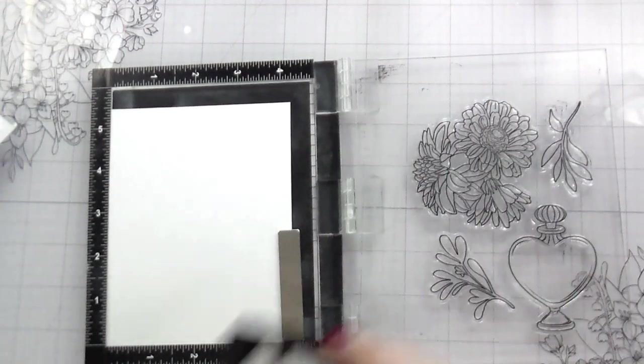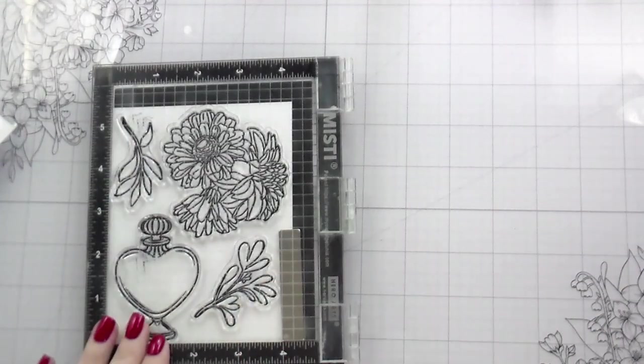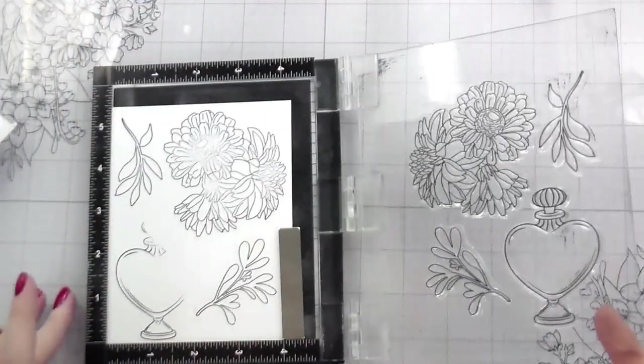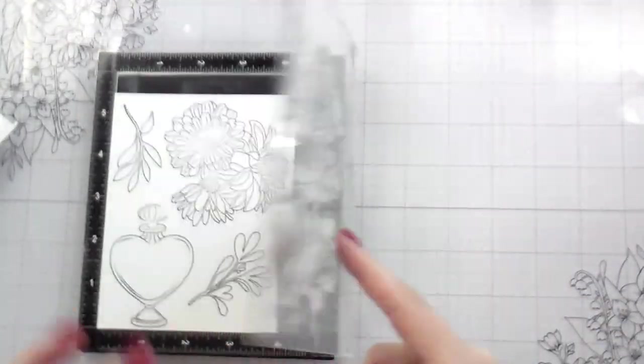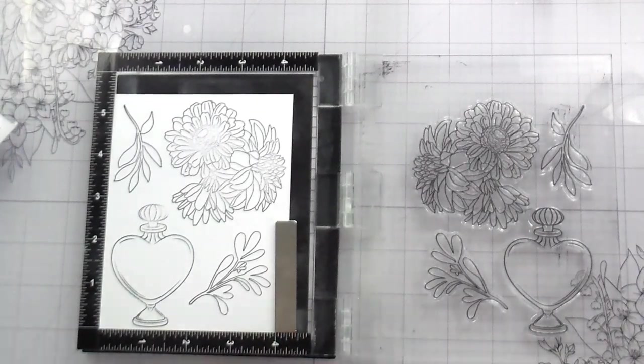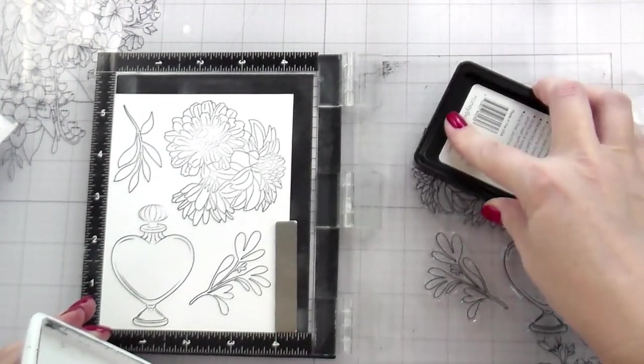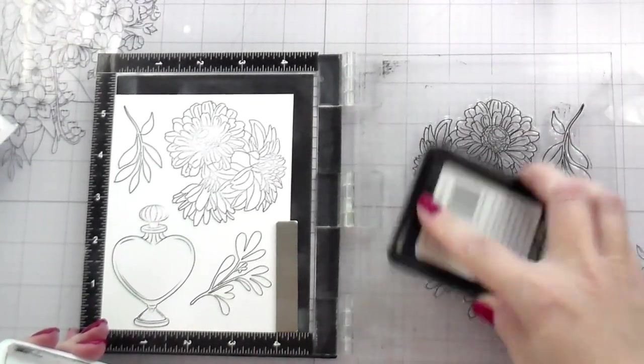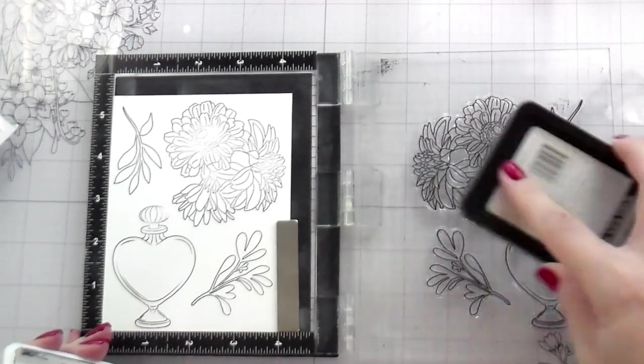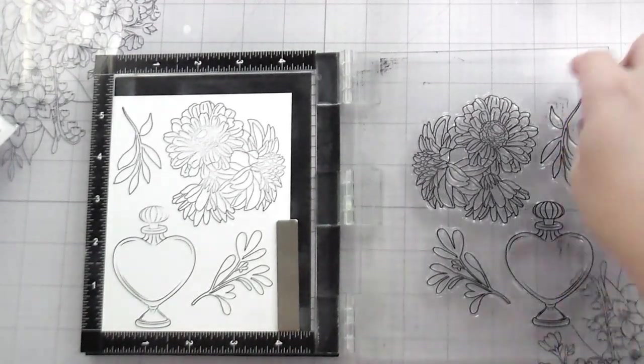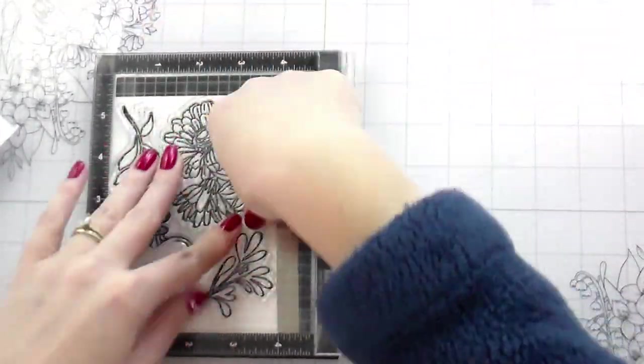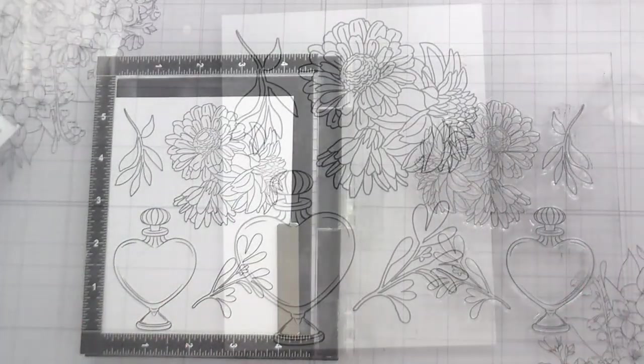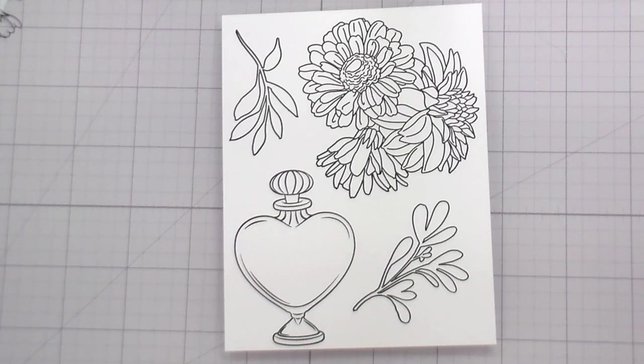Here I'm working on Neenah 80 pound solar white cardstock and I'm stamping in our intense black ink, which is safe for alcohol markers. I will be coloring with my Copics today. I didn't get a great impression the first time around. Thankfully for the Misti, I can go back in and ink it up a second time and stamp it down again. Sometimes those more detailed stamps can be a little tricky to make sure I have enough ink coverage. Once that is stamped, we're going to move on to the coloring.